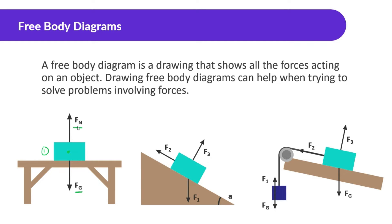Now let's look at diagram number two. We have a box on an incline with force one. The force going straight down is the force of gravity. The force perpendicular to the surface is the normal force — the incline plane pushing up against it. A good thing to know is that normal force is perpendicular to the surface almost all the time. And as the box slides down, force two is going to be the force of friction.